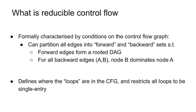The point of this is to set up the definition of what a loop is in the CFG. Every backward edge AB defines a loop with node B as the loop head. The condition that node B must dominate node A means that there is only one entry into the loop through the loop head. So another way of saying that the control flow graph is reducible is saying that every loop in the control flow graph is single entry.